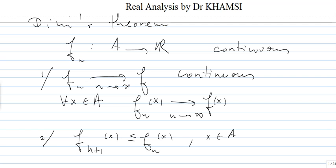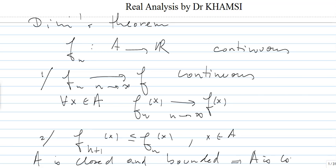This theorem is false if A is not what we call compact, or closed and bounded. The crucial assumption is that A is closed and bounded, which implies that A is compact — and this is essential for the validity of this theorem.